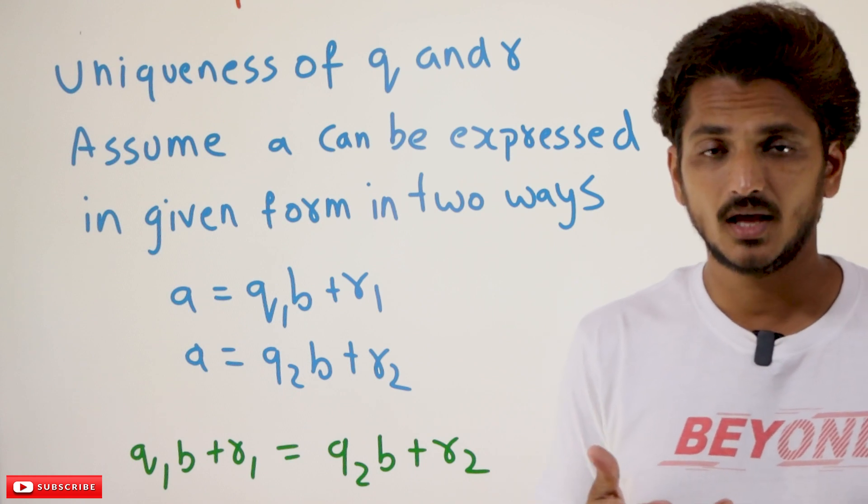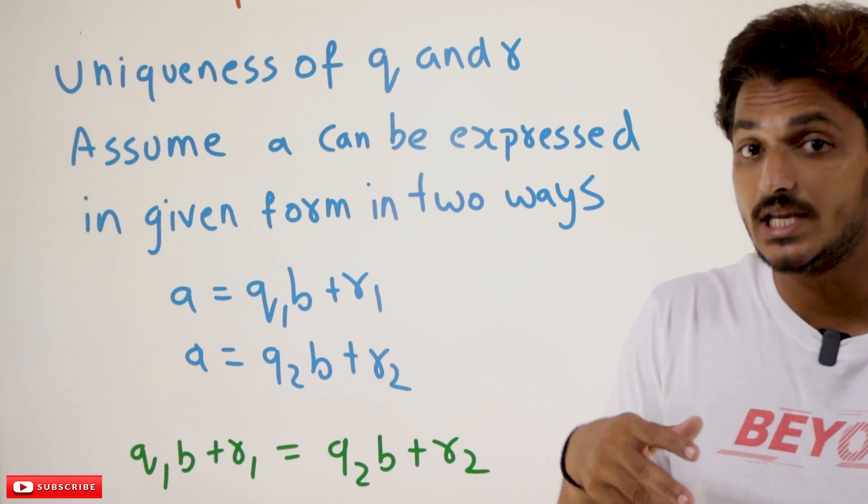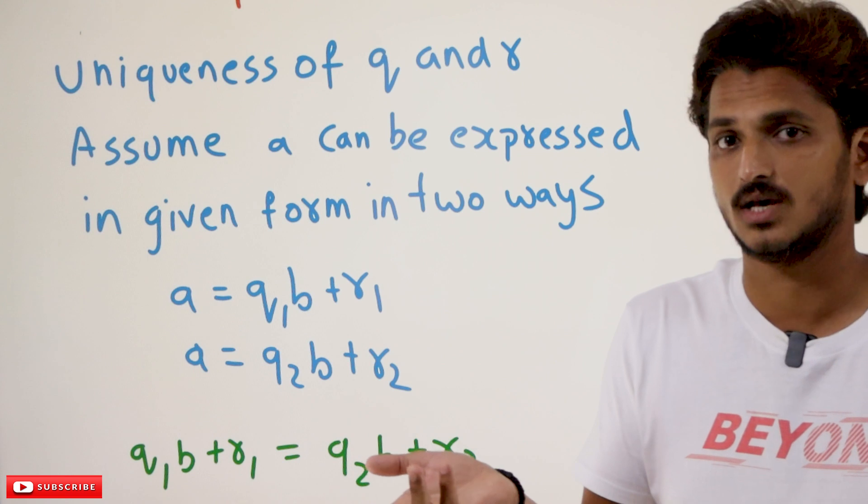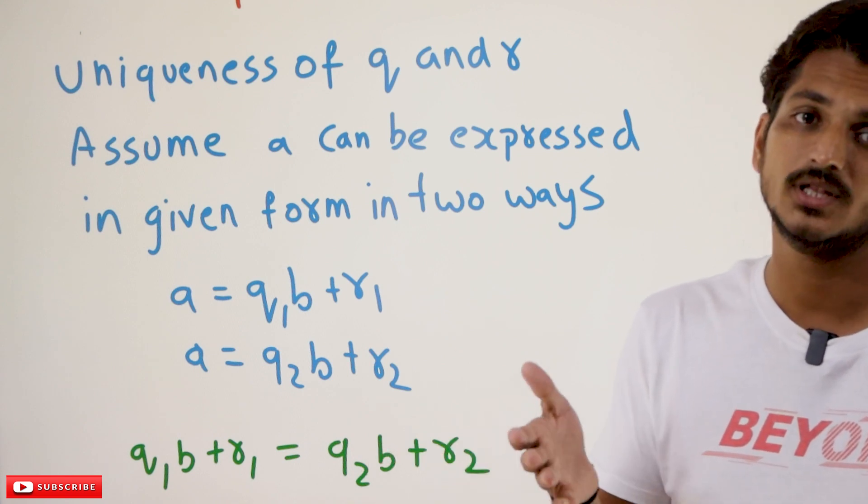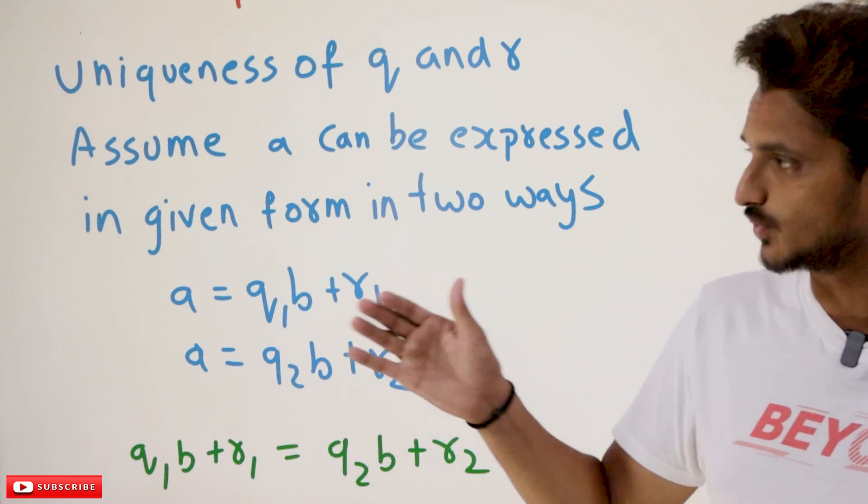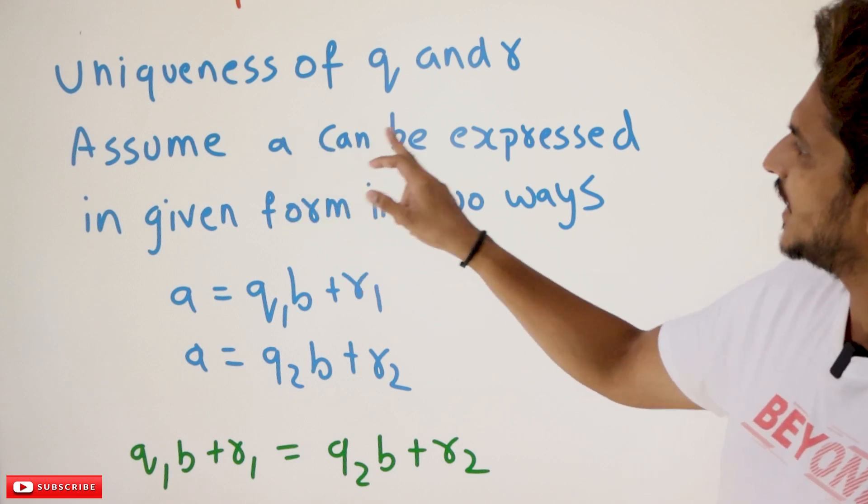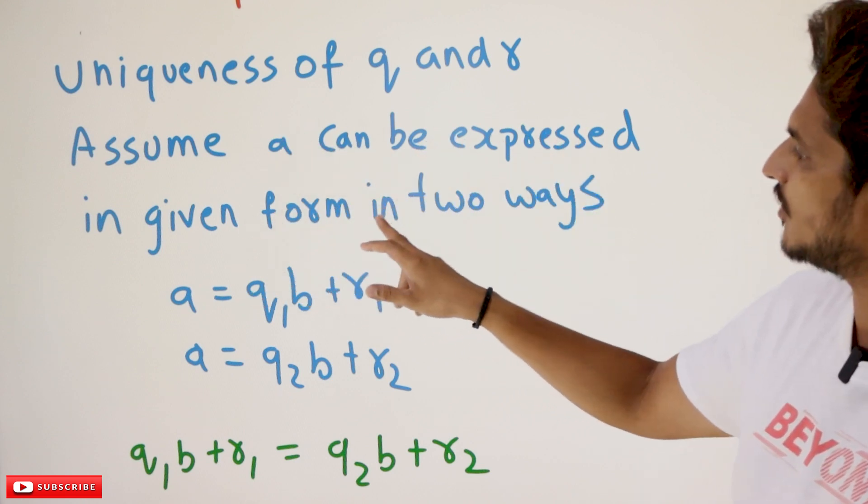Assume A can be expressed in the given form. So we are having multiple Q values and multiple R values, and we are showing that it is not possible. That is what we are doing here. Assume A can be expressed in given form in two ways.